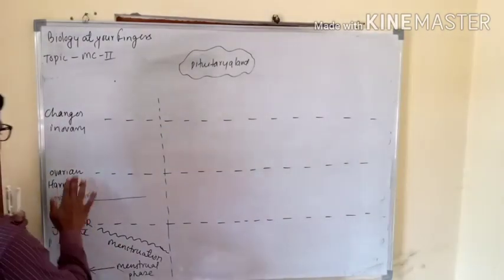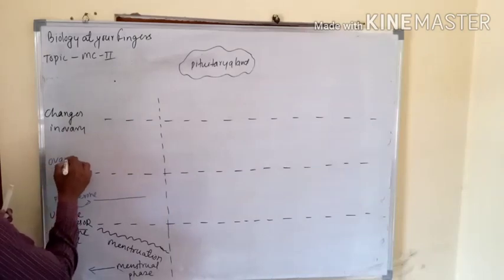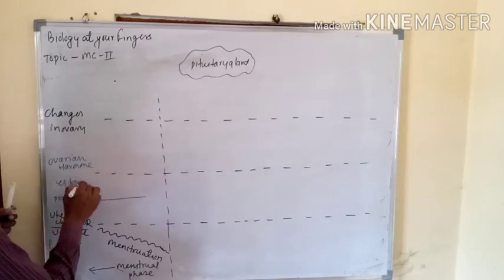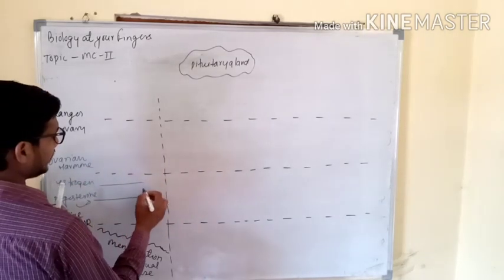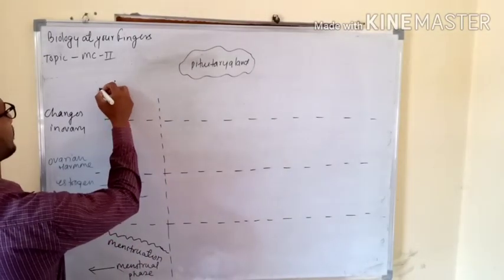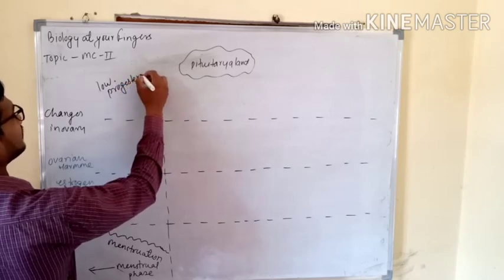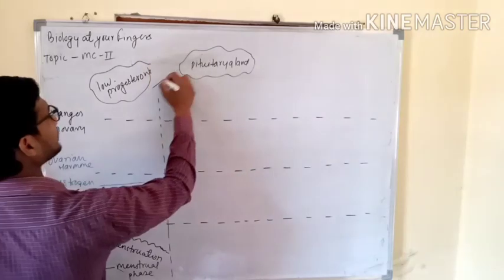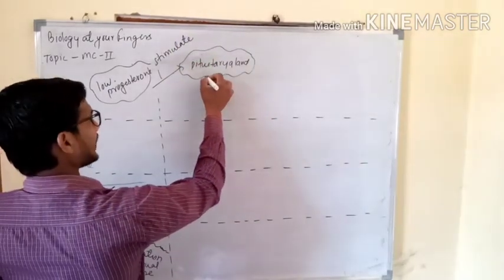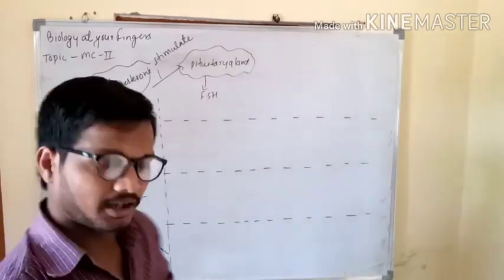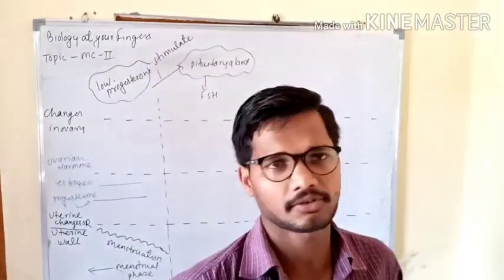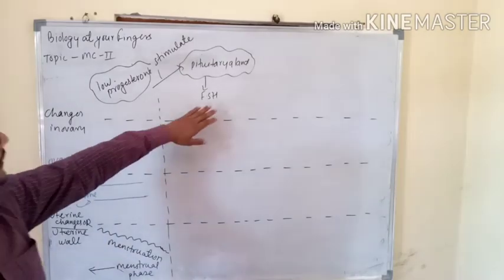The second hormone is estrogen, and the level of estrogen is also very, very low. Low levels of progesterone and estrogen act as a stimulus for the pituitary gland, stimulating it to release FSH. So now the FSH hormone is being released.